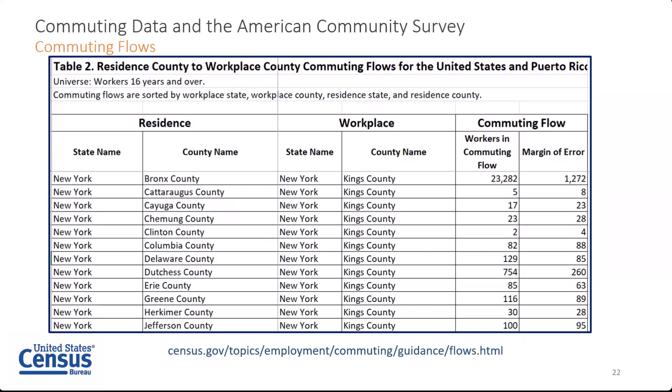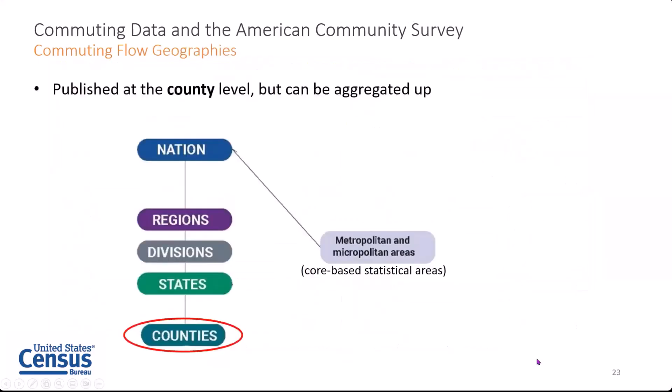We saw that about 12,000 people commuted from Kings County to Bronx County every day. Now we can see that about twice that many commute daily from Bronx County to Kings County. Once more, we're seeing some very large margins of error on some of the smaller estimates, so many estimates in the sample screenshot are statistically indistinguishable from one another. Our commuting flows datasets are published at the county level, so they can be aggregated up to the metro or micro level, core-based statistical areas, or anything above that — state division or region. They come out roughly every five years using non-overlapping five-year data. The granularity of these data tends to generate a lot of excitement within our data user community, especially for localities seeking to understand how people move around on a day-to-day basis.